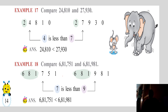We can also say this as: 27,930 is greater than 24,810. We write this using the symbol — the crocodile mark opens towards the greatest number.